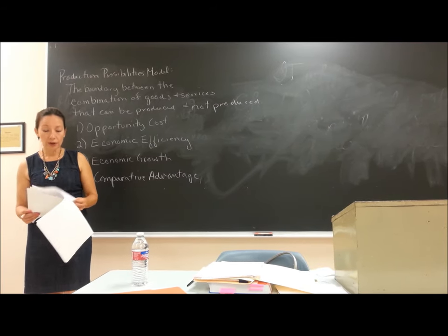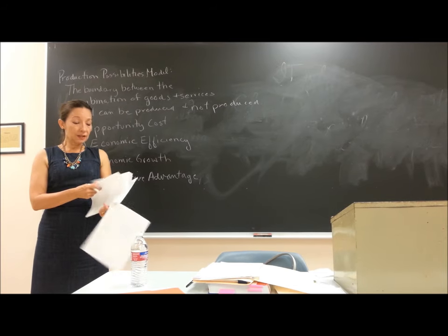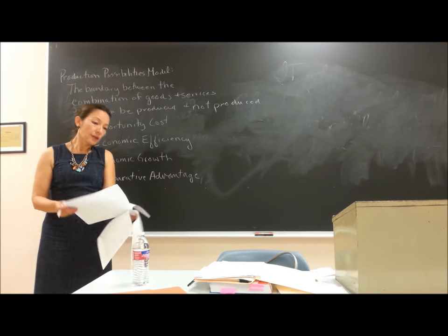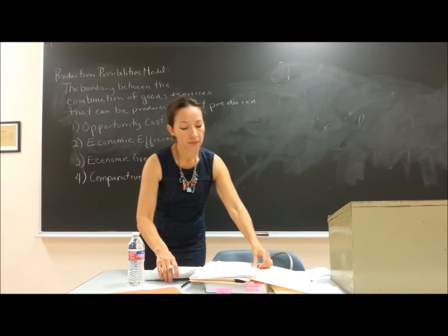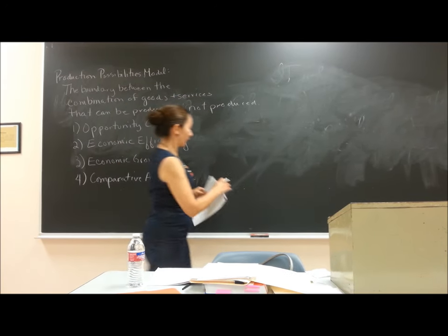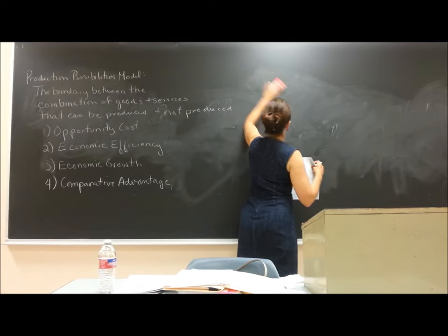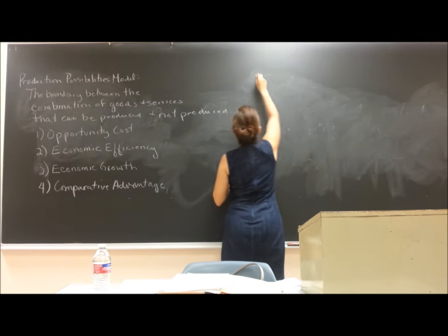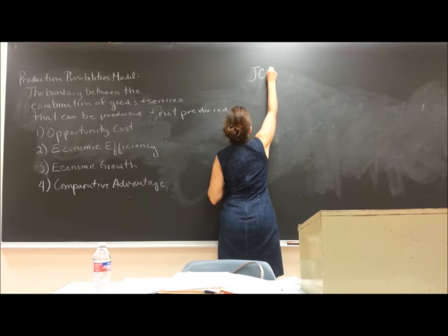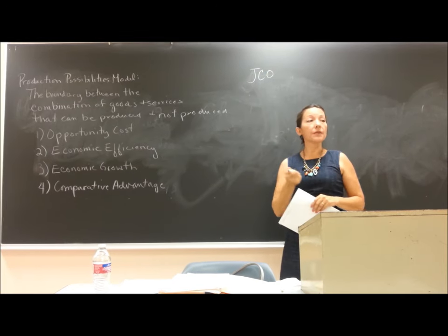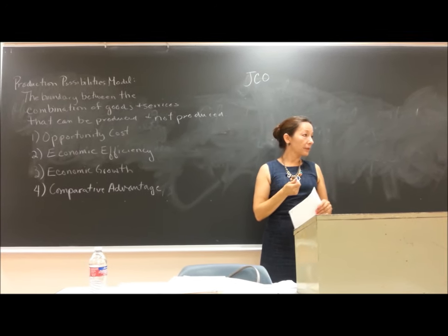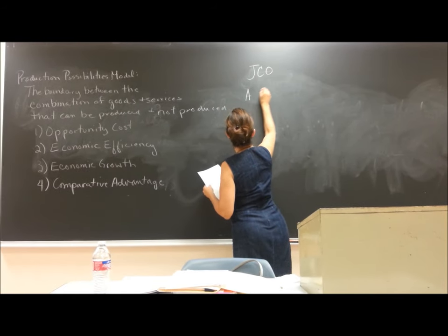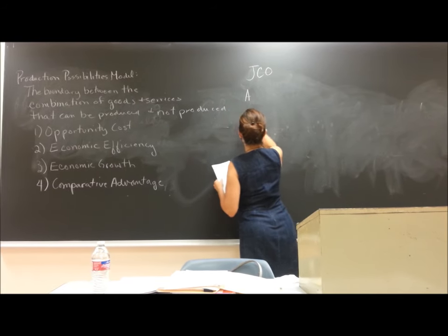I'm going to give you a scenario in which a company has some production choices. We're going to look at a company called JCO, which is an electronics company. JCO can produce either cameras or CD players, and it has all these possible combinations: A, B, C, D, and so on.